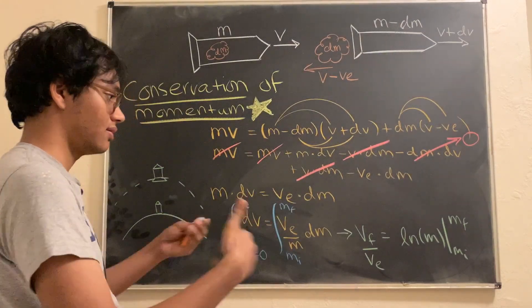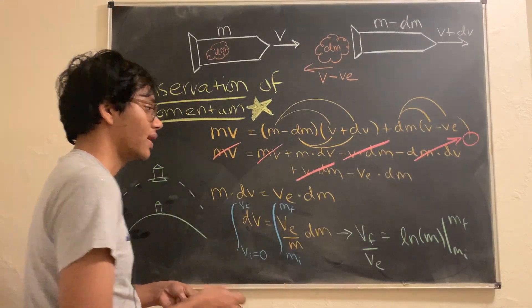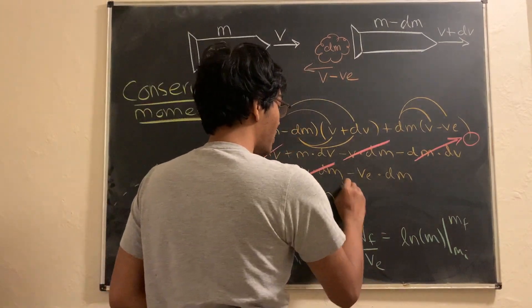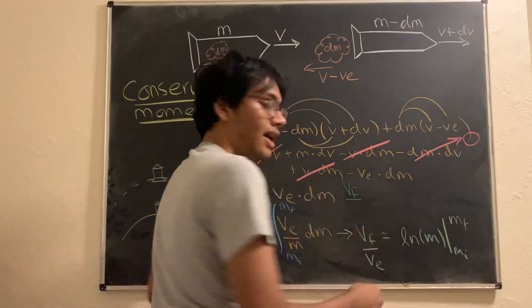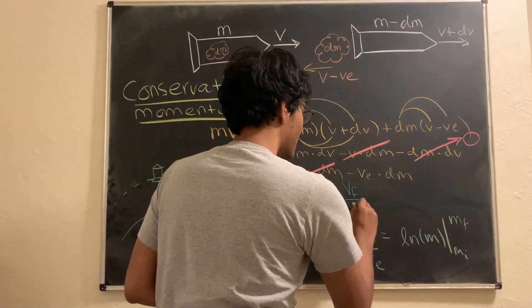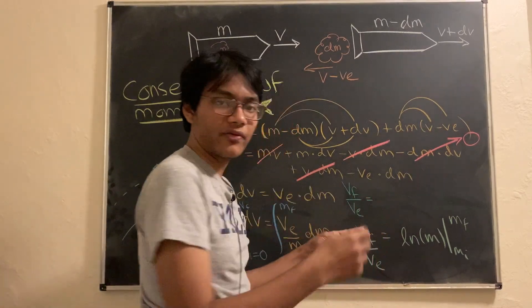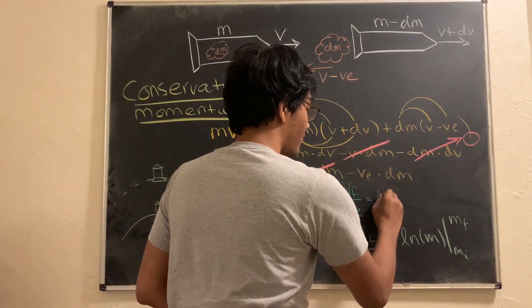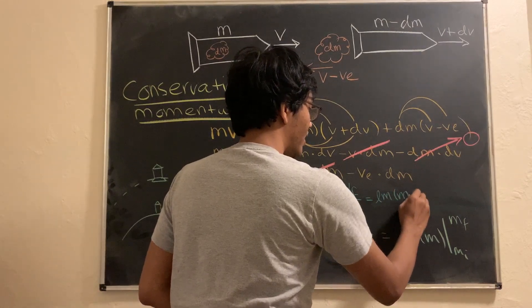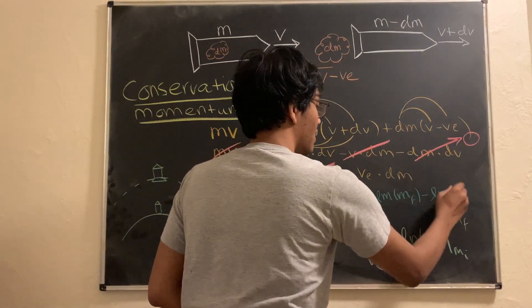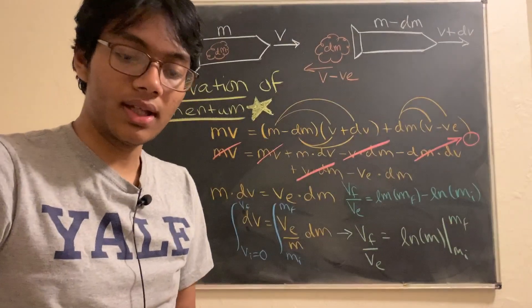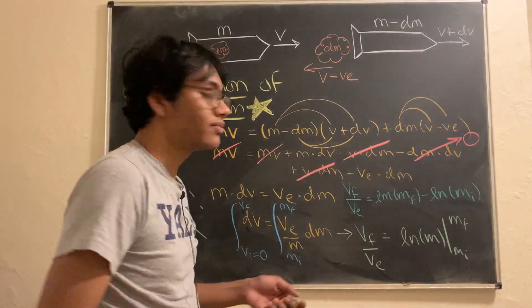And so, if I go ahead and simplify this, what do I have? The ratio of the final velocity of the rocket when it reaches the atmosphere to the exhaust velocity, which is about 4 kilometers per second, I believe, equals log of M, log of the final mass minus log of the initial mass of our rocket.